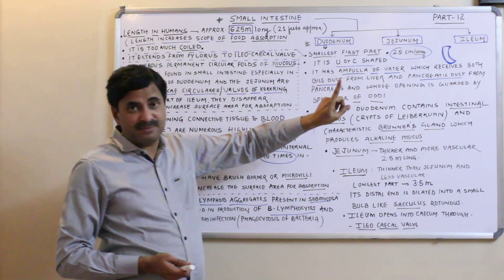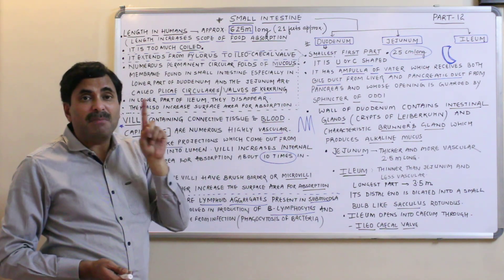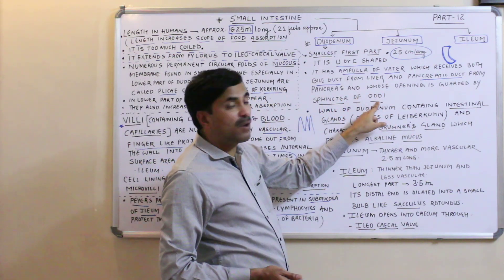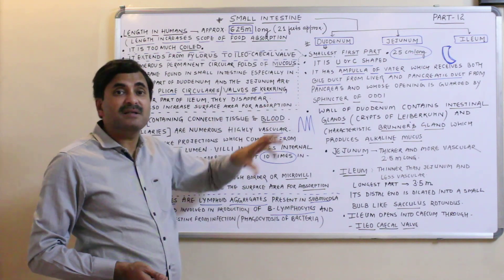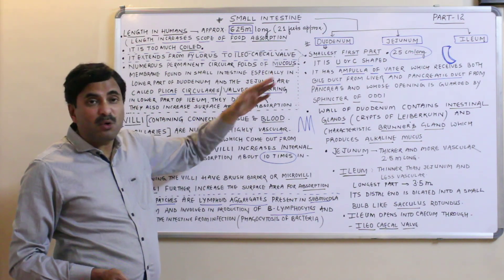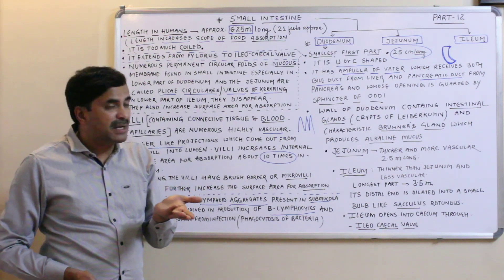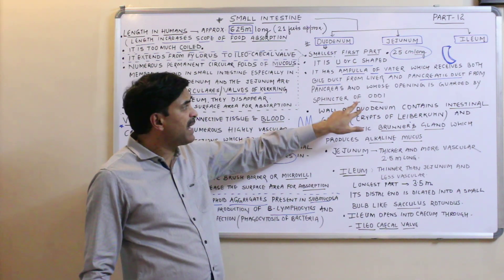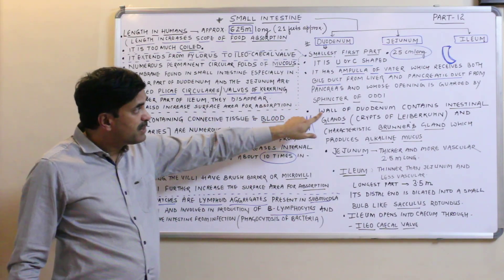The duodenum has an ampulla of Vater, a bulbous structure which receives both the bile duct coming from the liver and the pancreatic duct coming from the pancreas. The opening is guarded by the sphincter of Oddi. The common bile duct and pancreatic duct together are called the hepatopancreatic duct, and this hepatopancreatic duct opens into the ampulla of Vater, guarded by the sphincter of Oddi.